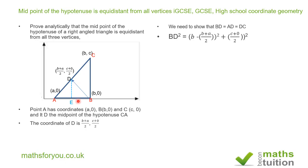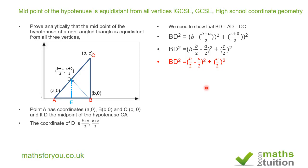So ED squared is (c / 2) squared. Opening up the brackets, we end up with BD² equal to (b minus b/2 minus a/2) squared plus (c/2) squared. Now b minus b/2 is b/2, so BD² = (b/2 minus a/2) squared plus (c/2) squared.